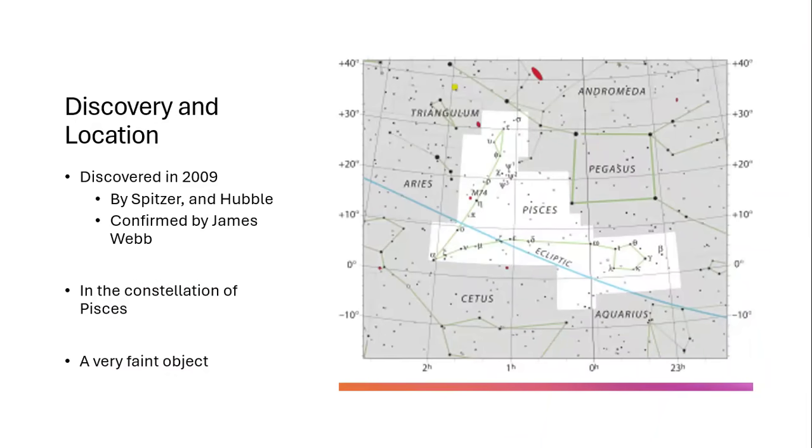Discovered in 2009 by the Spitzer Space Telescope, an infrared telescope, and followed up by Hubble, and then more recently by the James Webb Telescope as well. It's in the constellation of Pisces the fish, but you're not going to be able to track it down with amateur equipment. It's far too faint. Somebody will probably prove me wrong for saying that, but I don't mind.